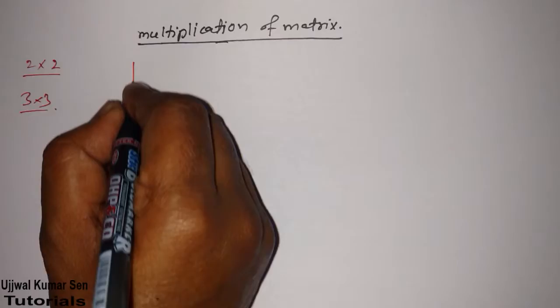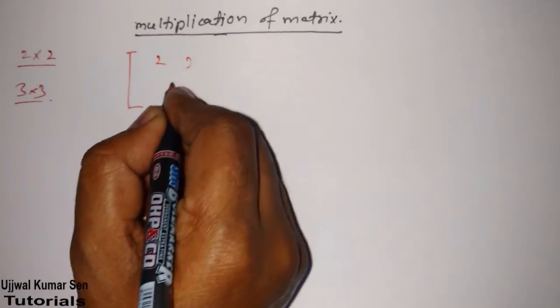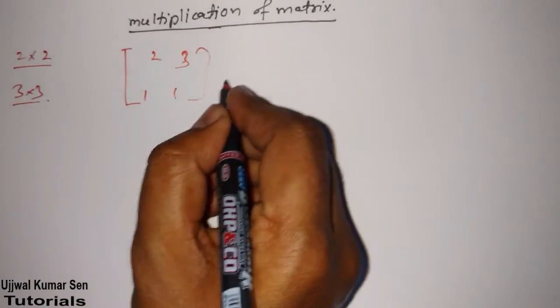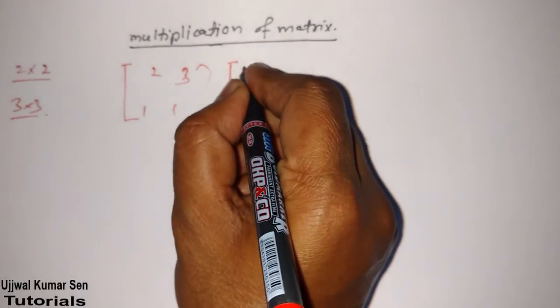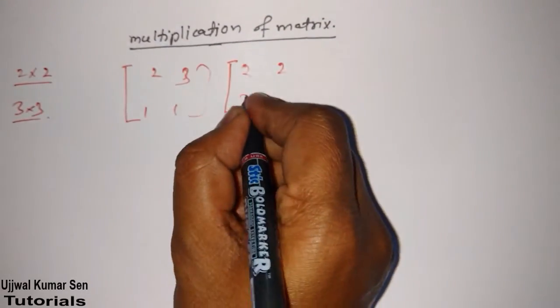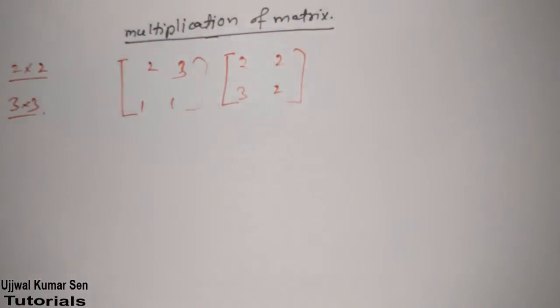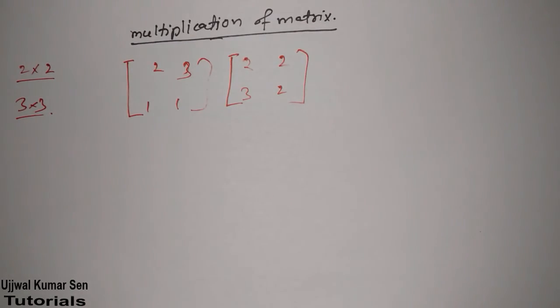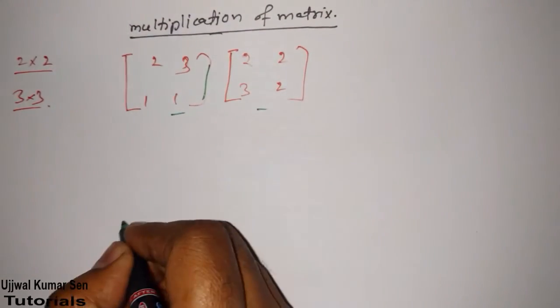So, suppose that we have a matrix 2, 3, 1, 1 and another matrix we have 2, 2, 3, 2. So, we wanted to do multiplication of these two matrices.